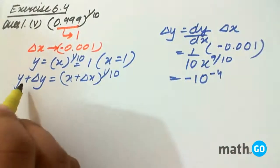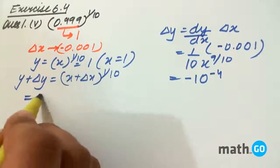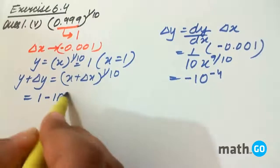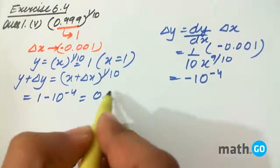Now if we find this value, y is 1 minus 10 to the power minus 4, this will give the answer to be 0.9999.